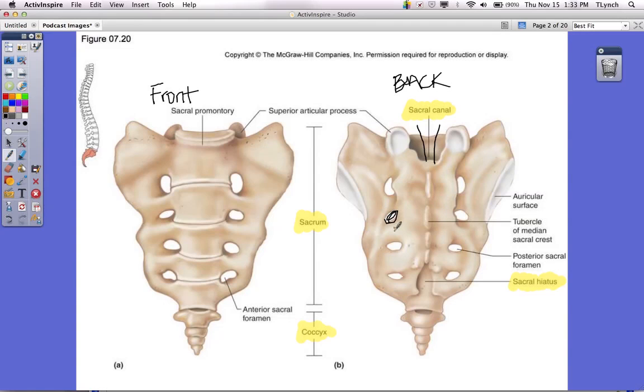All of these holes that you see too in bones, wherever you see a hole, that's just basically a place for nerves and blood vessels to be able to travel through that bone to get to where they need to go. So that is your sacrum and your coccyx.